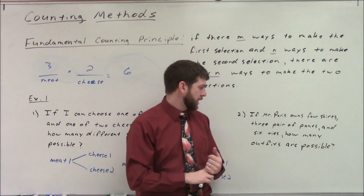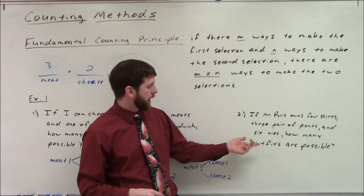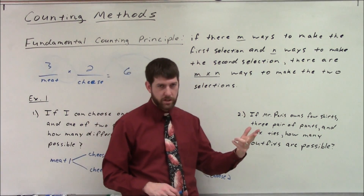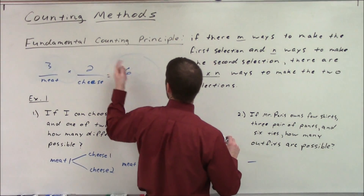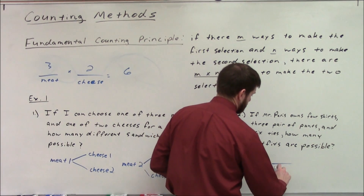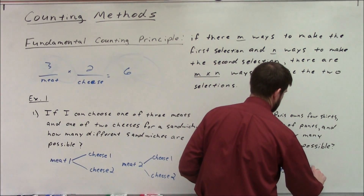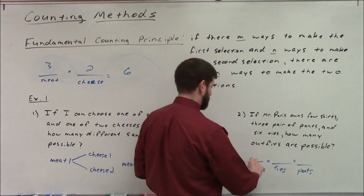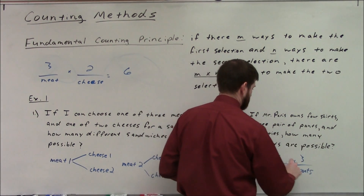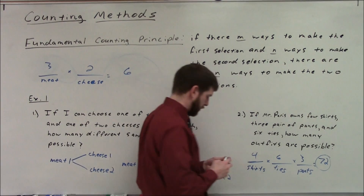Let's look at this next one. If Mr. Paris owns four shirts, three pairs of pants, and six ties, how many outfits are possible — how many ways can I get one shirt, one pair of pants, and one tie? The Fundamental Counting Principle says just multiply: four shirts times three pants times six ties gives us 24 times 3, which is 72 different outfits.